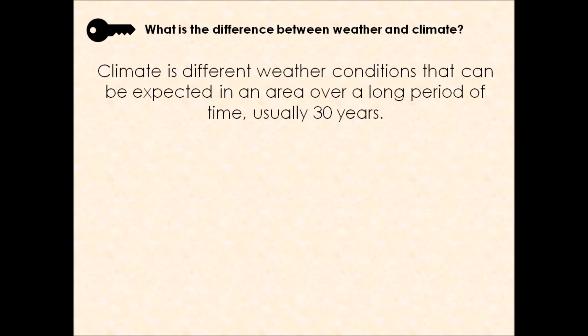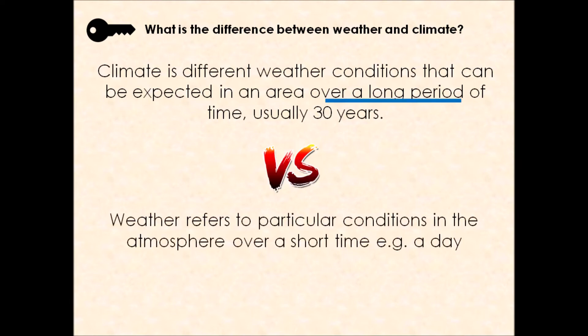This is why, as geographers, we know that the Sahara Desert experiences very high temperatures — because its climate has been measured over a long period of time. In comparison, the term weather refers to particular atmospheric conditions over a short period of time, on a daily basis. When you look out the window and see rain, sun, or fog, that's the weather.